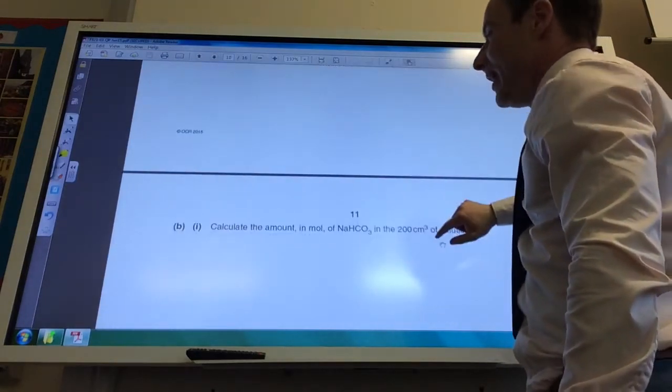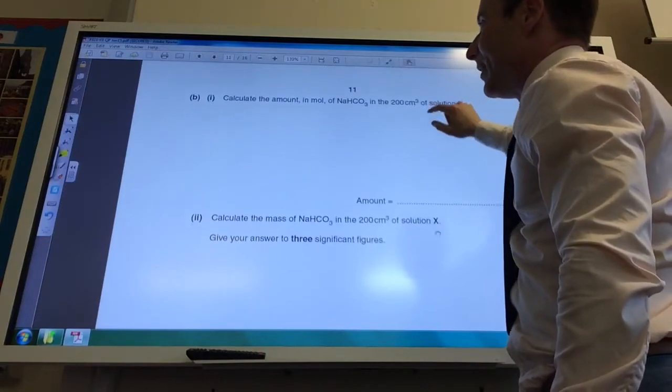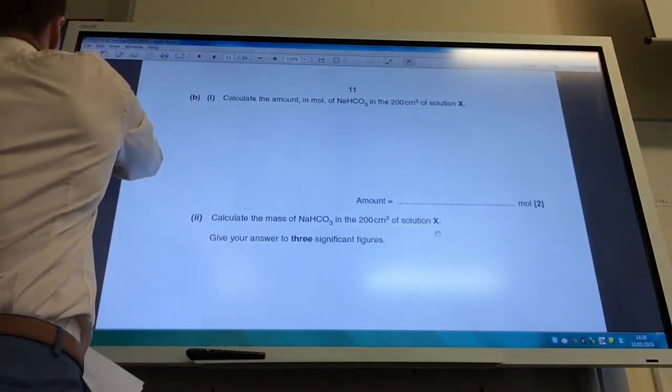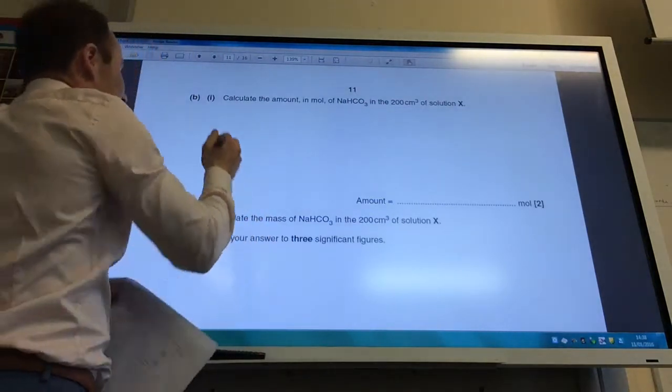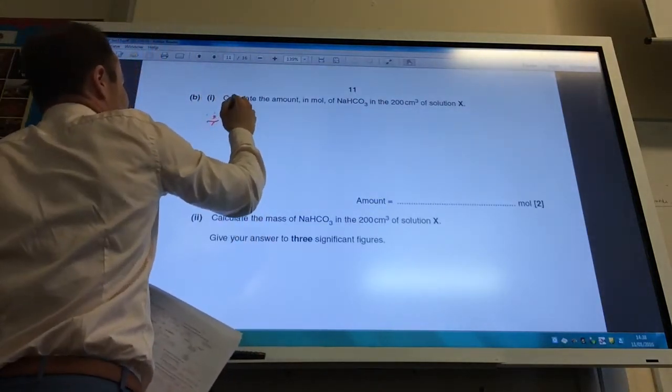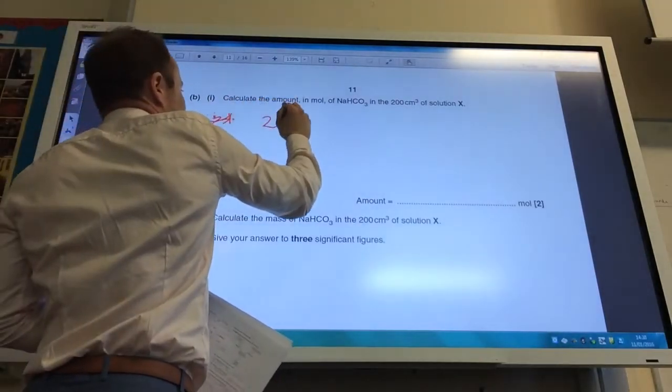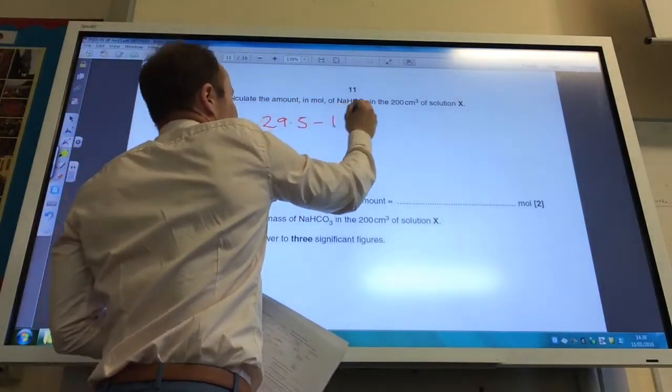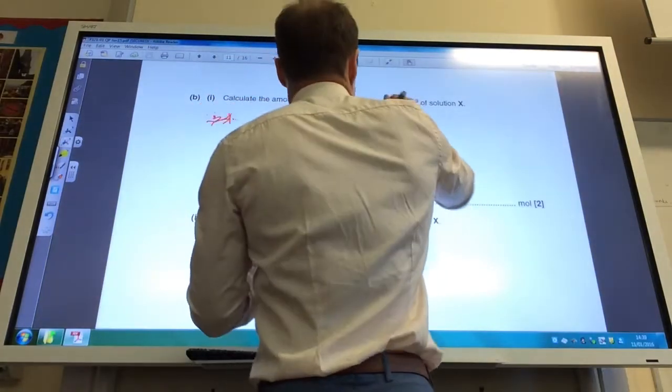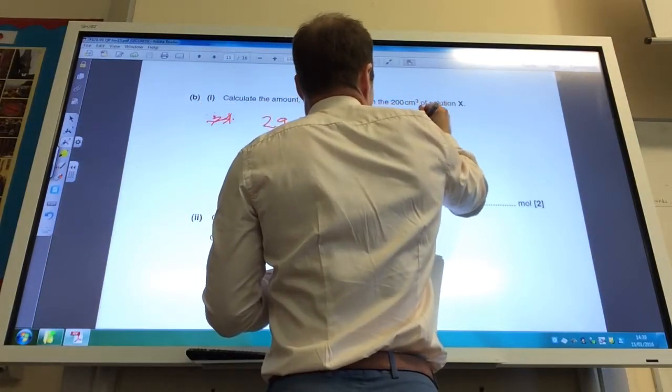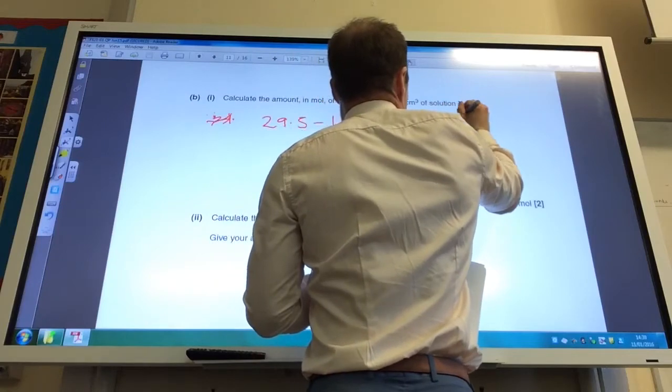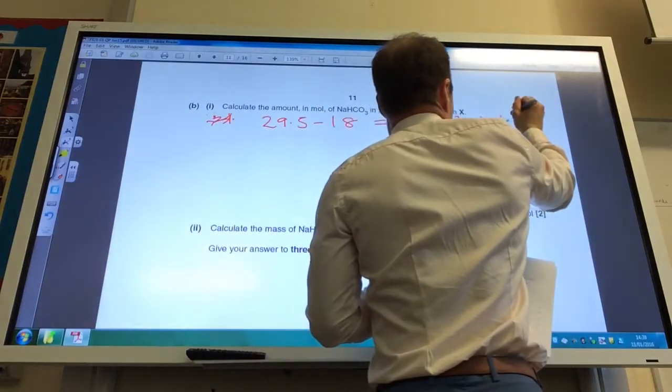So let's go back and do that one. Okay, so 29.5 minus 18 is equal to 11.5 centimeters cubed of sulfuric acid.